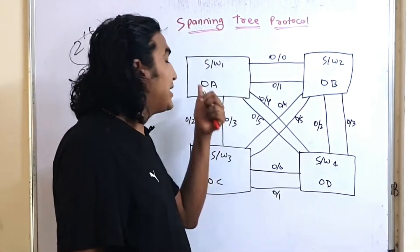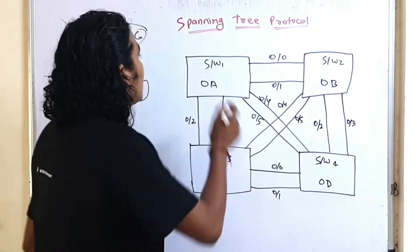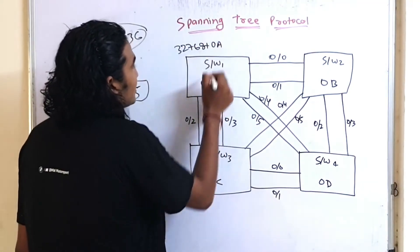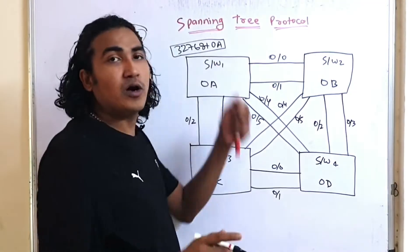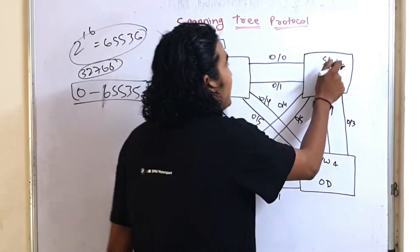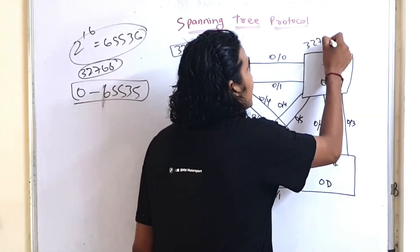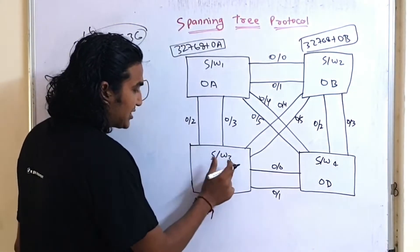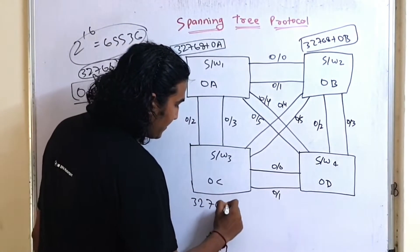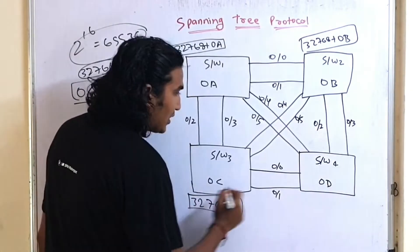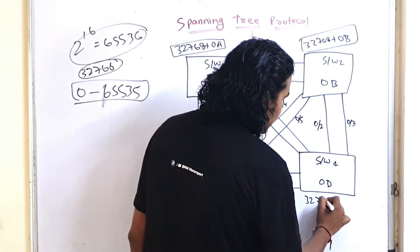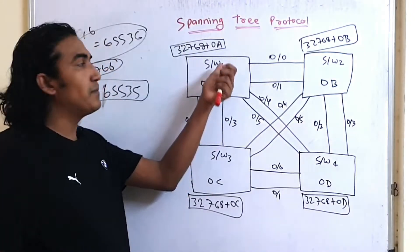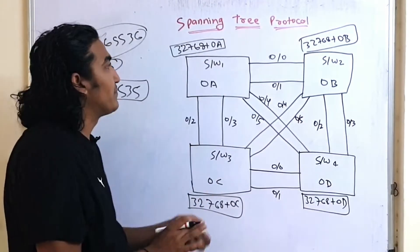The bridge ID of Switch 1 is 32768 plus its base MAC address 0A. The bridge ID of Switch 2 is 32768 plus 0B. The bridge ID of Switch 3 is 32768 plus 0C. Now, which switch will become the root bridge? Switch 1, because it has the lowest bridge ID.